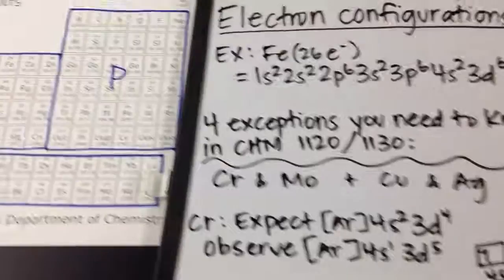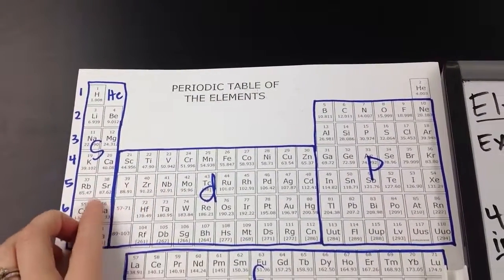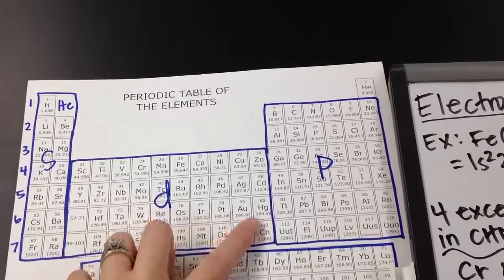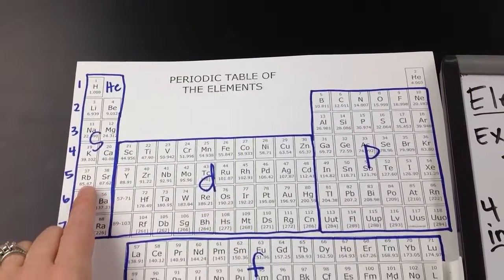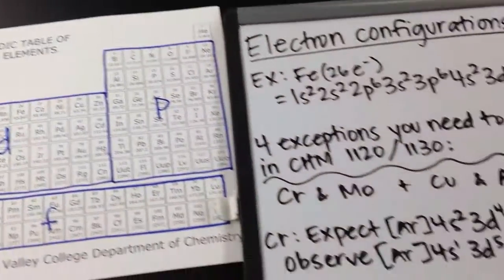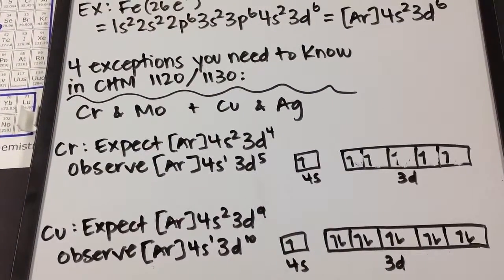This would apply to molybdenum. The only difference between molybdenum is that the value of N is going to be increased. And it would also apply to silver. Again, the value of N is just increased. And those are the 4 exceptions that you need to worry about in the D-block for CHEM 1120 and CHEM 1130.